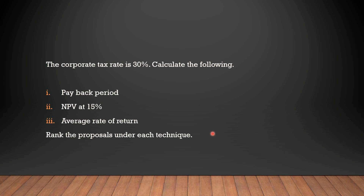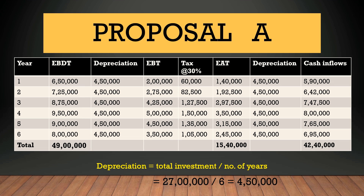Since there are two proposals, we'll calculate all three things separately for each. Starting with Proposal A — look at this table carefully. If you understand this table you can easily solve the rest. The first column shows years one through six. The EBDT — Earnings Before Depreciation and Tax — figures are given to us in the problem. The total EBDT for Proposal A is 49 lakh rupees.